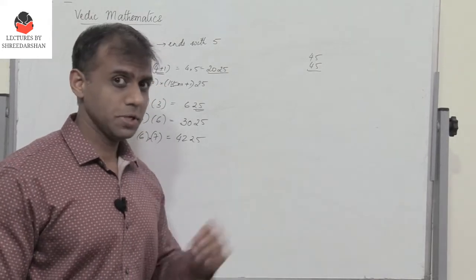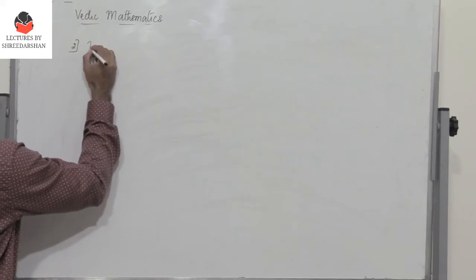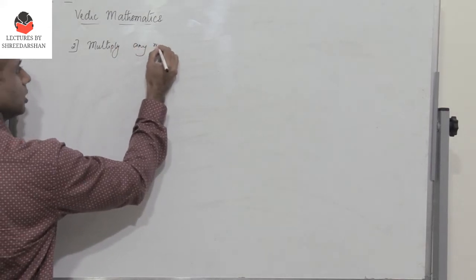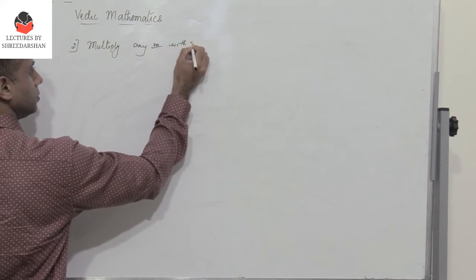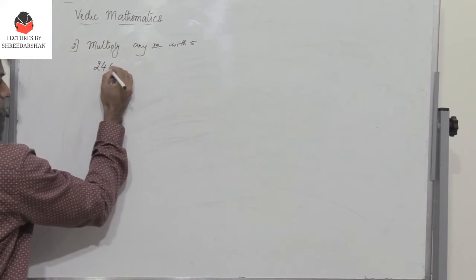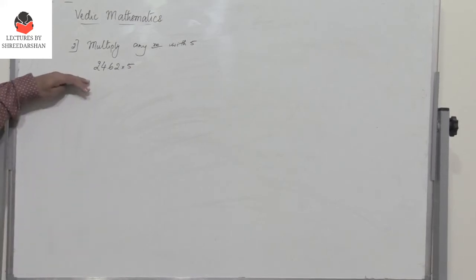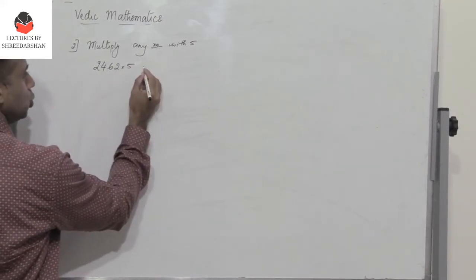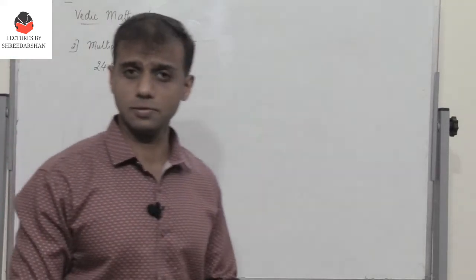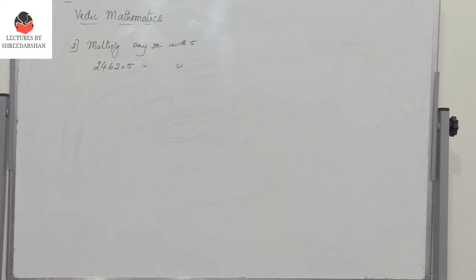This is the first trick. Let's move on to the second: multiplying any number by 5. Say I have a large number like 2462. I need to multiply this by 5, and doing it the traditional way — 5 into 2, carry 1, and so on — would take a lot of time. Let's see how this can be solved very easily using the principles of Vedic mathematics.